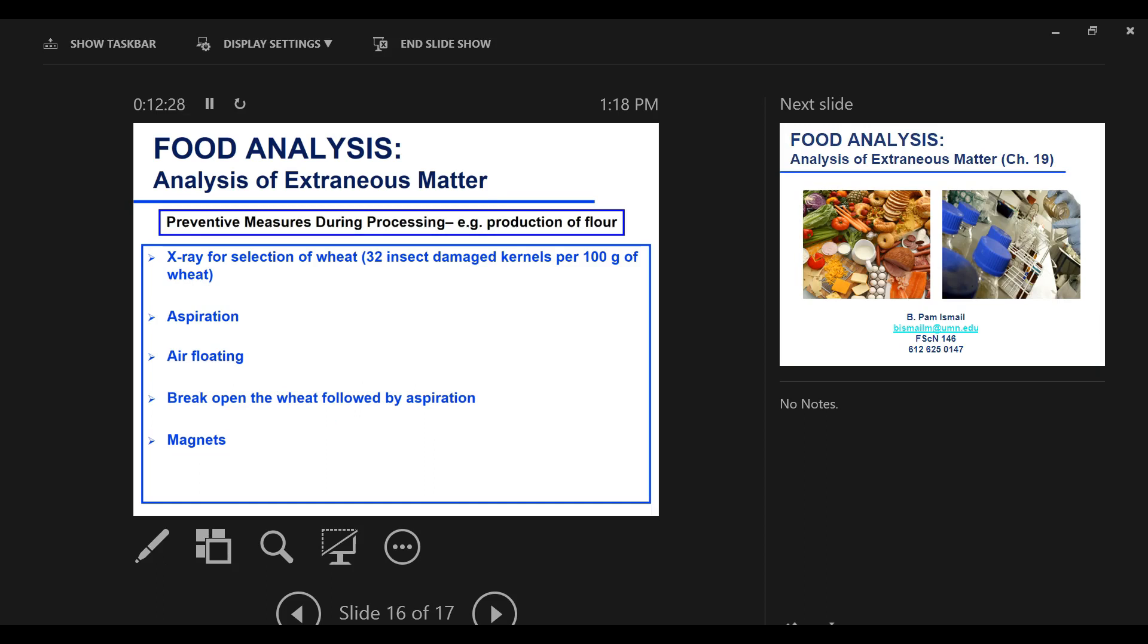This is done by light microscopy. Like I said, you're allowed to have 32 insect damaged kernels per 100 grams of wheat. But in a preventative manner, if you do the actual test and you find more than that, what you can do is you can open the wheat and then do aspiration. You can run your wheat on a belt and have blow air, so then the insect fragments will float and then your grains will remain on the belt. So you can remove some of that infestation that way.